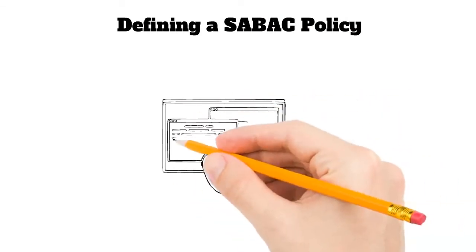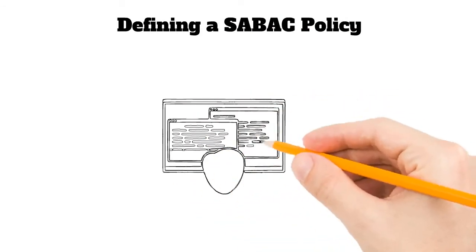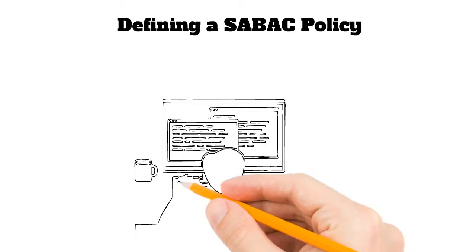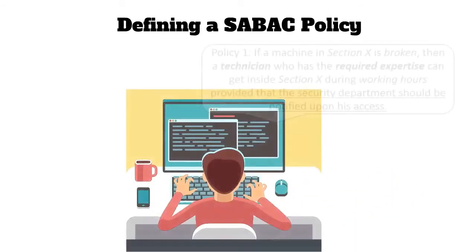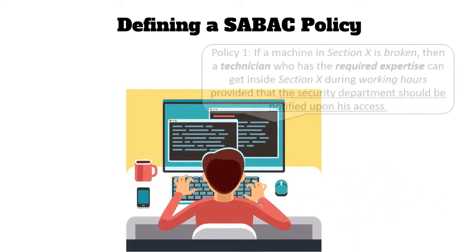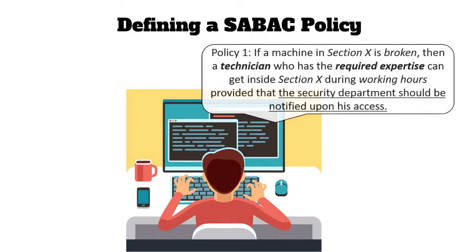In this case, ABAC controls access using attributes represented in italic. ABAC also provides obligations, which are extra conditions like the underlined text. Besides, semantic technologies provide semantic synonyms of attributes to the access control engine.